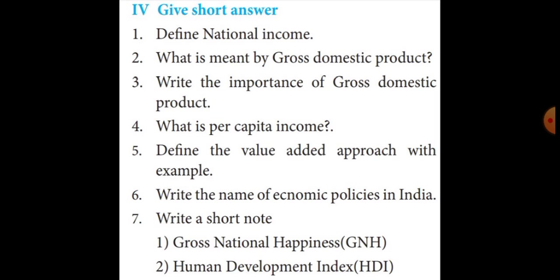Roman numeral 4 — short answers are given. You mark those short answers. The first question is: define national income. The answer is page number 293.